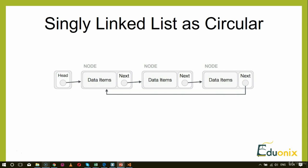Let's focus on a singly linked list as circular. This is the diagram representing the same. In a singly linked list, the next pointer of the last node points to the first node, which means it forms the picture of a circular linked list.